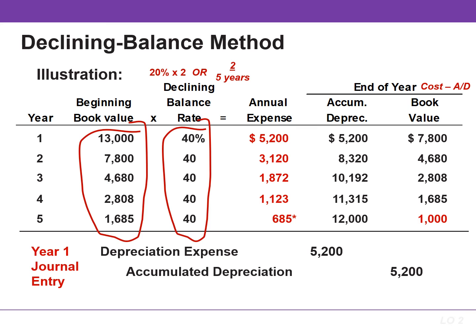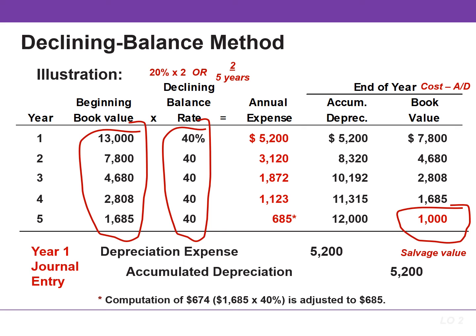This method ignores salvage value when determining the annual depreciation expense, but salvage value limits the total depreciation that can be taken. Depreciation stops when the asset's book value equals its expected salvage value. In the last year of the asset's life, it is sometimes necessary to adjust the amount of depreciation expense so that the book value equals the expected salvage value. For example, note the adjustment of $685 in the last year.